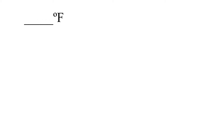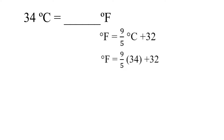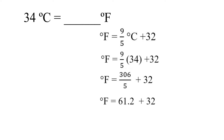A Celsius temperature is given. To convert it to the Fahrenheit scale, use this formula. Substitute 34 for degrees Celsius. Multiply 34 by 9 and it gives us 306. Divide 306 by 5 and that is 61.2. Add 61.2 and 32 and it gives us 93.2. The temperature in Ilocos, North Philippines in degrees Fahrenheit is 93.2.